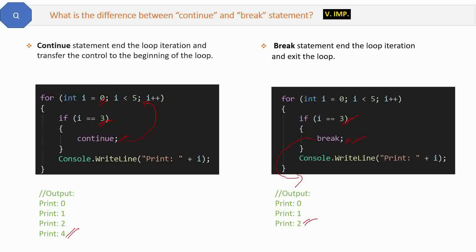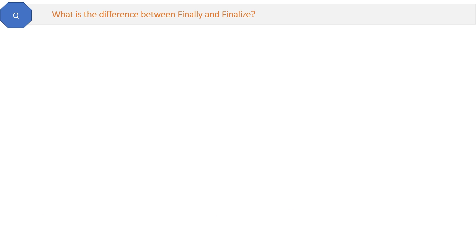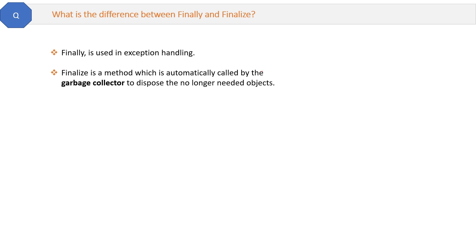Question seven: What is the difference between 'finally' and 'finalize'? Their names are similar but they have no relation. 'Finally' is used for exception handling. 'Finalize' is a method which is automatically called by the garbage collector to dispose of objects that are no longer needed.